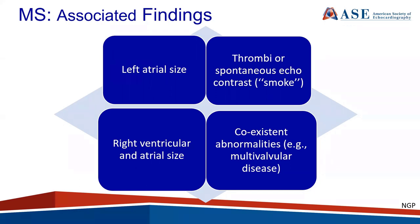While in the majority of cases the predominant lesion is mitral stenosis, multiple valves can be involved — either two-valvular disease such as mitral stenosis and aortic stenosis, or in occasional cases even all four valves are involved. So systematically, one has to look at the mitral valve, the aortic valve, the tricuspid valve, and the pulmonic valve during the echo examination.